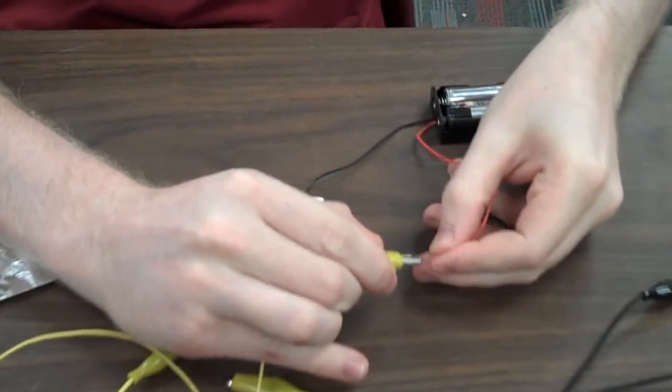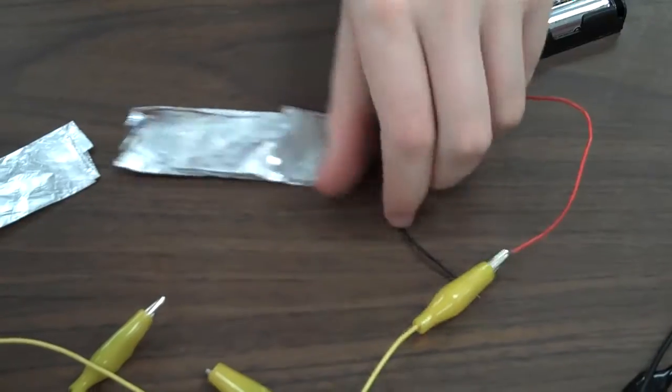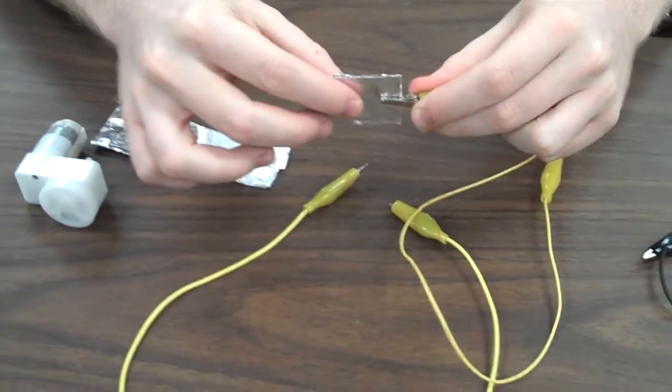Connect one alligator clip to one end of the battery, like so, and connect the other end to the first half of your poor man switch.